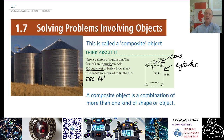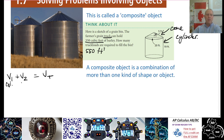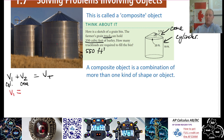Let's tackle this. We're going to have Volume 1 plus Volume 2 equals Volume Total. Volume 1 is going to be the cylinder, Volume 2 will be the cone. For Volume 1, it's a good idea to write the formula out. The volume formula for a cylinder is pi r squared times h — that's the area of the circle at the bottom times the height.